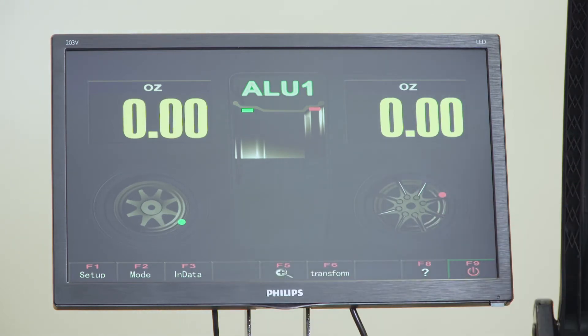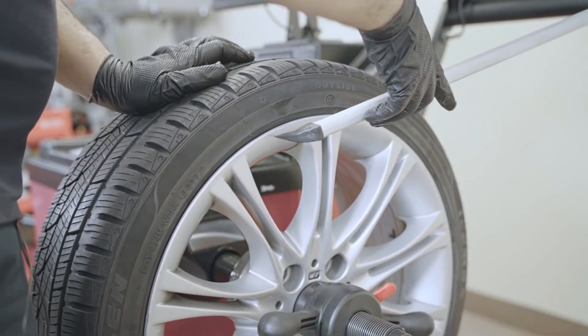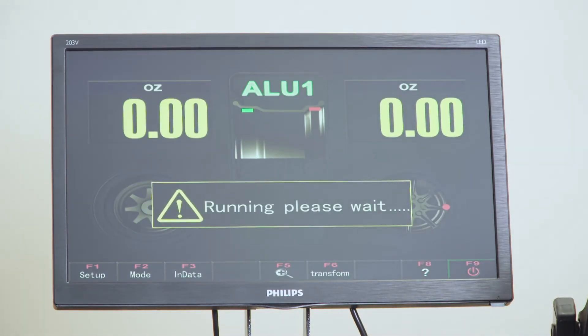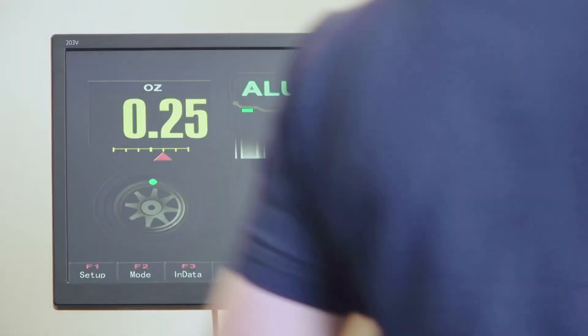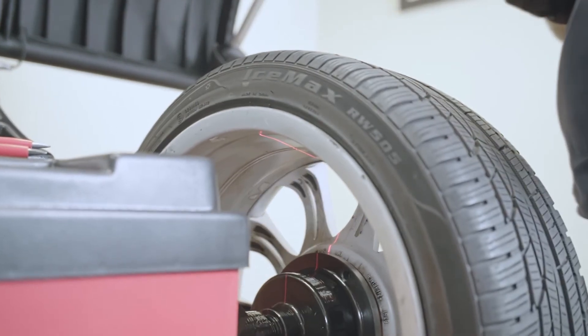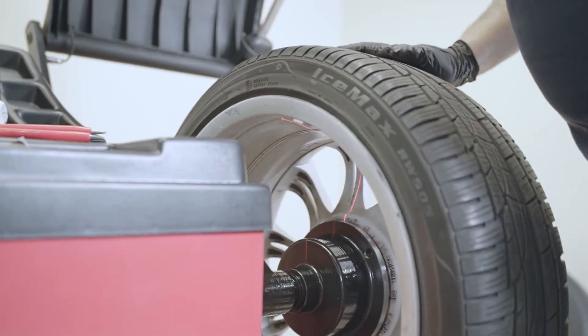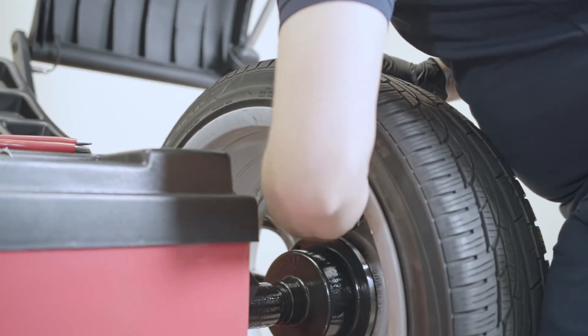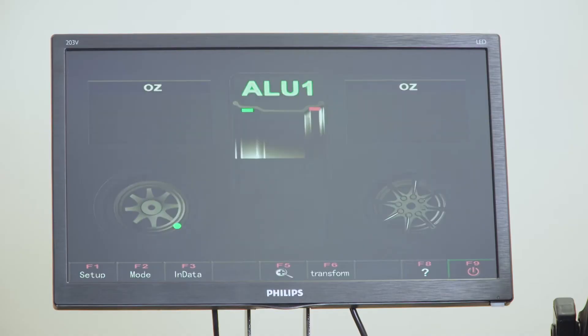We'll tell the machine F3 for data input. F9 and run. You can see the laser. Go to the opposite side. Spin the wheel. That's it.